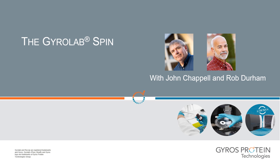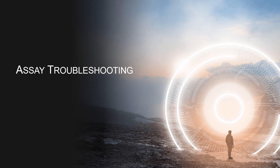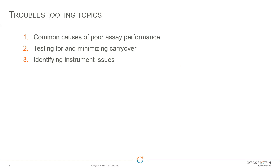Welcome to another episode of the GyroLab SPIN video podcast. My name is Rob Durham, and my name is John Chappell. Today's topic is assay troubleshooting. We're going to give GyroLab users some key tips and tricks for mitigating common problems you might see when doing assay development on the GyroLab system. The topics we want to cover are the common causes of poor assay performance, testing for and minimizing carryover, and identifying instrument issues.